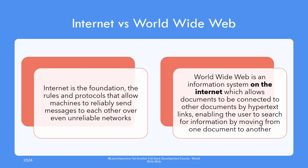One must understand the difference between internet and World Wide Web. The internet is the foundation — the rules and protocols that allow machines to reliably send messages to each other over even unreliable networks. It has protocols like FTP which allow browsing files on a remote computer, and Telnet which allows using a remote computer program. Until the 1980s these were the dominant protocols and are still used today. World Wide Web, in comparison, is an information system that runs on the internet using multiple protocols under the hood and allows documents to be connected to other documents by hyperlink text. In today's terminology, World Wide Web to internet is similar to what Facebook is to Android. Internet came far before World Wide Web.